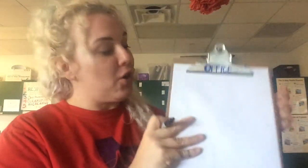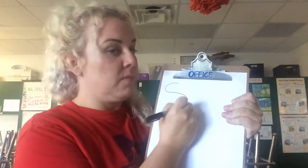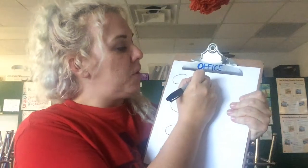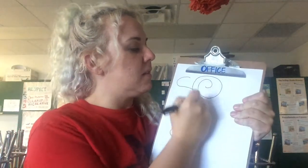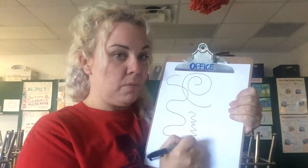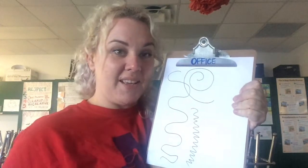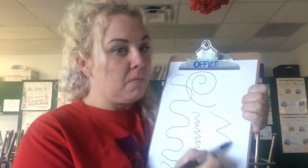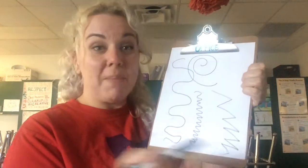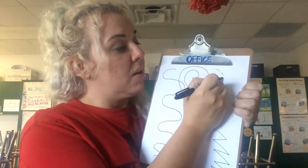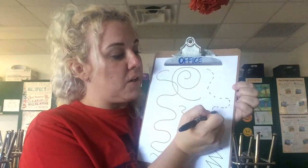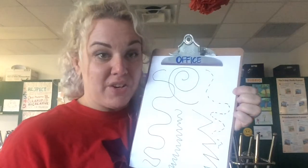Curvy lines can definitely show movement. We could do spirally lines — those show movement. How about a wiggly line? What about a zigzag? What about a dash line? I can turn a dash line into a curvy or wiggly line just by changing the direction.